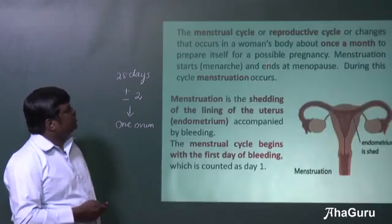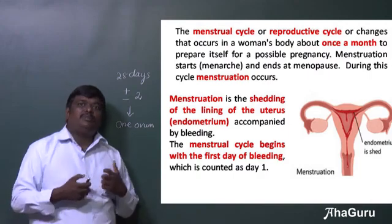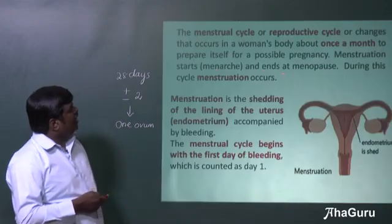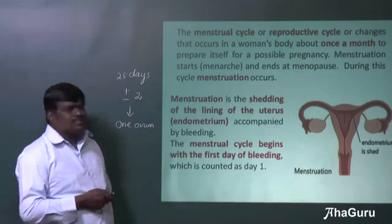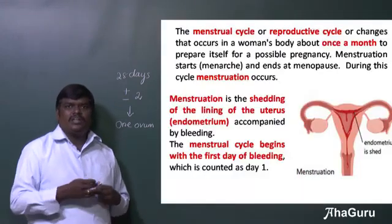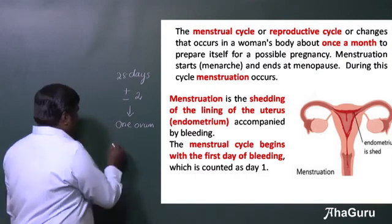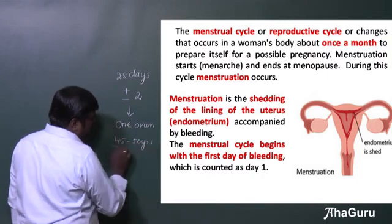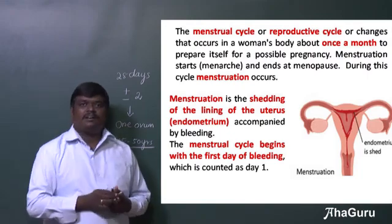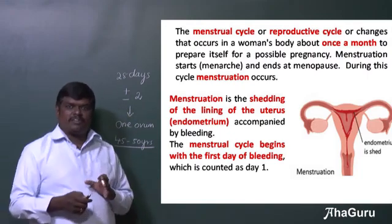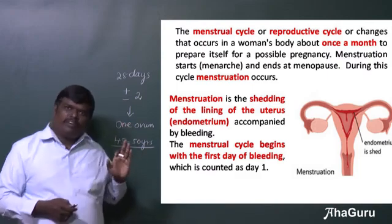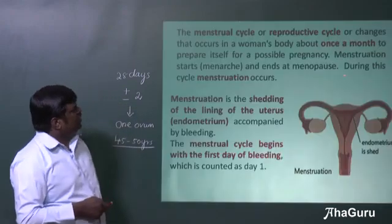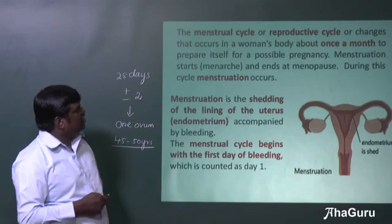This menstrual cycle starts at the time of puberty — that is attaining age — and it starts with menarche and stops with menopause. Menopause is the stage which begins at the age of 45 to 50 years. Menopause is the cessation of the menstrual cycle, so this cycle is present from puberty till around 50 years, after which it will not occur.